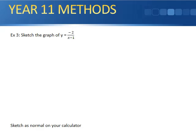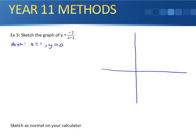Example 3: sketch y = -2/(x - 1). Work out the asymptotes first. There's an asymptote at x - 1 = 0, so x = 1, and the y-asymptote stays at y = 0. Remember this is a negative graph, so it's going to go in the second and fourth quadrants.